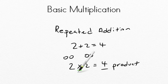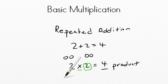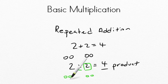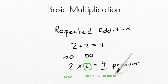What that's really saying is there are two groups of two. So we have a group of two here and we have a group of two here, and if we add those all together we have four: one, two, three, four. Two groups of two. Let's take a look at another one.